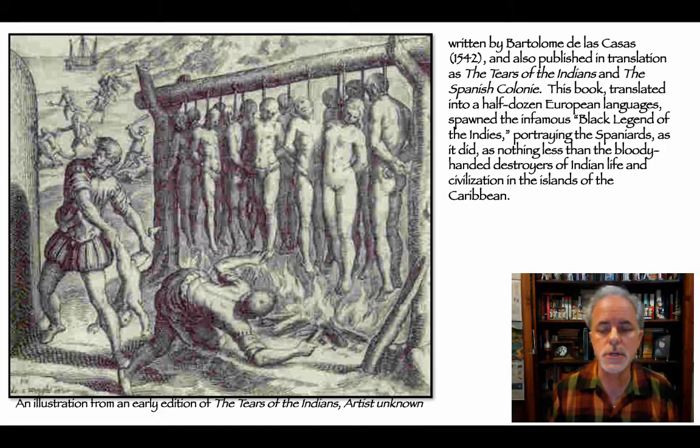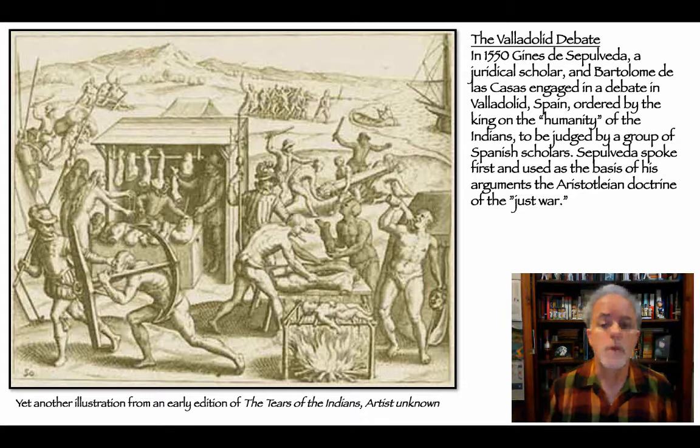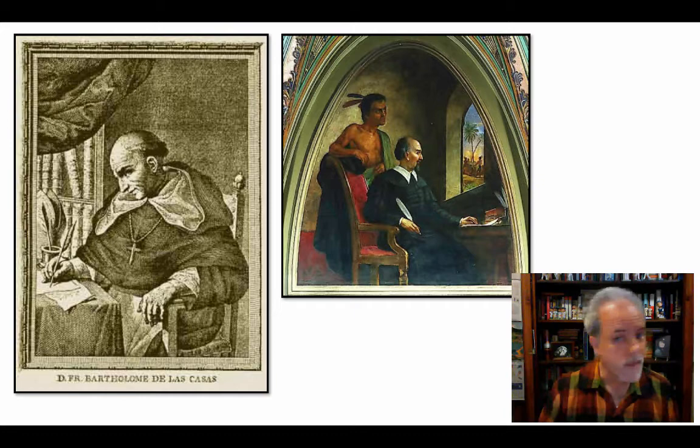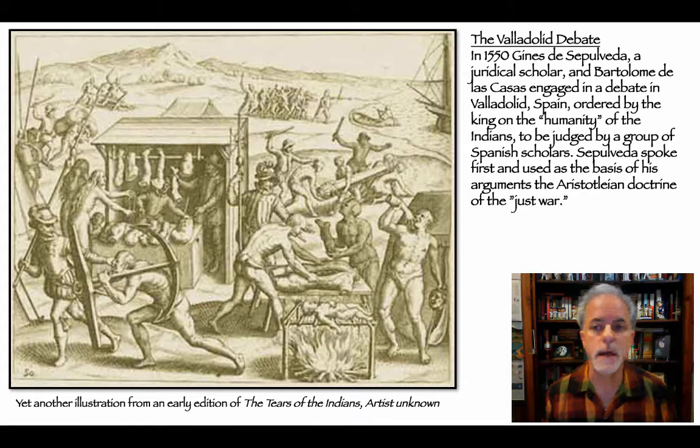Vittoria was an armchair scholar — all of his arguments about Indian rights were made without his ever having visited the Americas. He relied on evidence from 'A Short History of the Destruction of the Indians,' written by Bartolome de las Casas in 1542, also published as 'The Tears of the Indians' and 'The Spanish Colony.' This book, translated into half a dozen European languages, spawned the infamous Black Legend of the Indies, portraying the Spaniards as the bloody-handed destroyers of Indian life and civilization in the Caribbean.